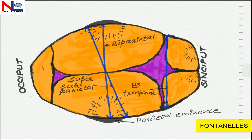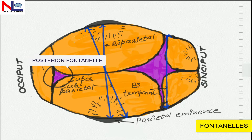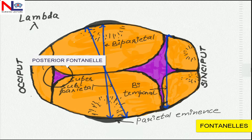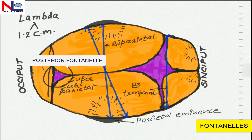Next, moving on to the fontanels. Fontanels are the points where two or more sutures meet together. There are altogether six fontanels in the fetal skull, and two have obstetric significance. The posteriorly situated fontanel is termed as the posterior fontanel, or lambda. It looks like the Greek letter lambda — a triangular shaped structure measuring about 1.2 centimeter on either side. It is bounded posteriorly by the lambdoidal suture and anteriorly by the sagittal suture, and it closes by the age of six weeks.